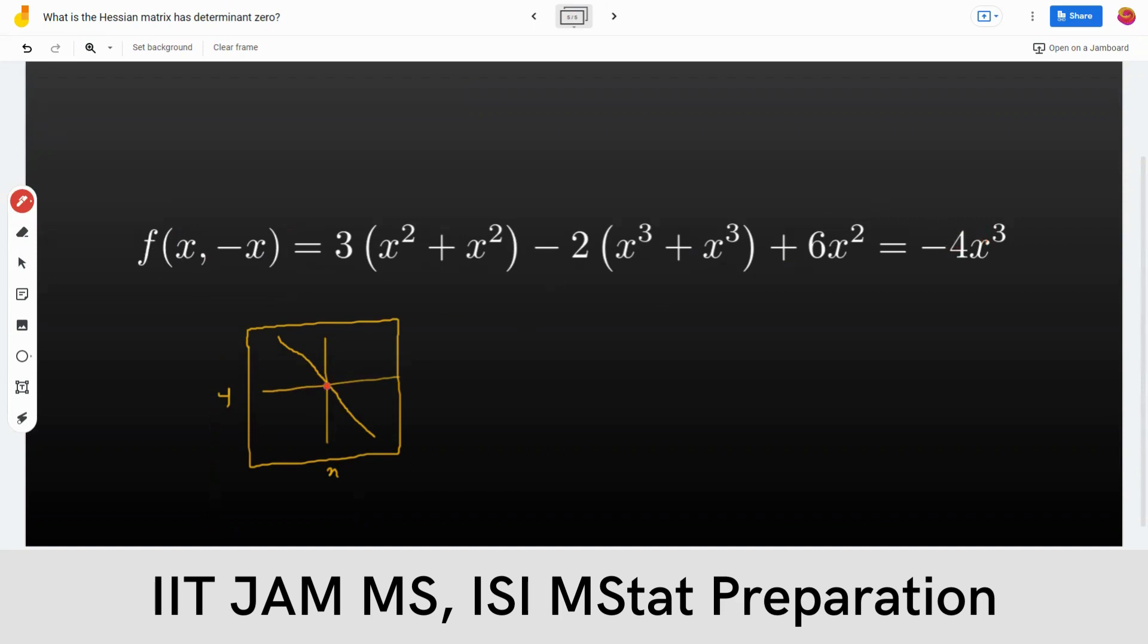The idea is that therefore, for x greater than zero, that means here, it's negative value. The function takes negative value. And here it takes positive value. That means along this line, if you observe along this line, it's minus 4x cubed in something. It's negative and positive.